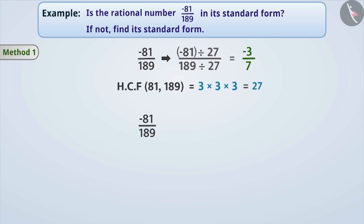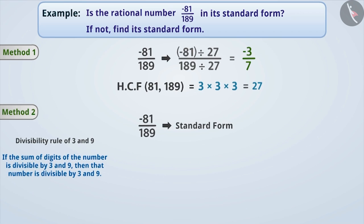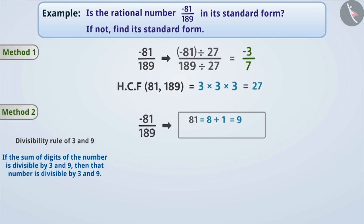There is another method of obtaining the standard form of minus 81 by 189 using the laws of divisibility. The sum of the digits in 81 is 9, which is divisible by 3 and 9. Similarly, the sum of digits of 189 is 18, which is also divisible by 3 and 9. So we can divide both the numerator and denominator by 3 and 9.